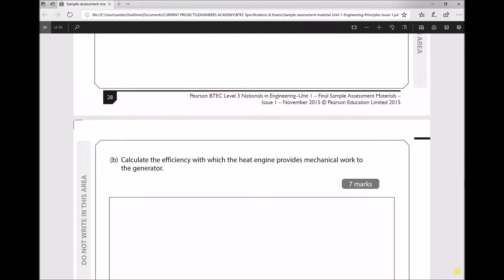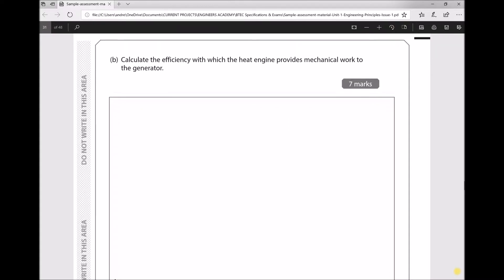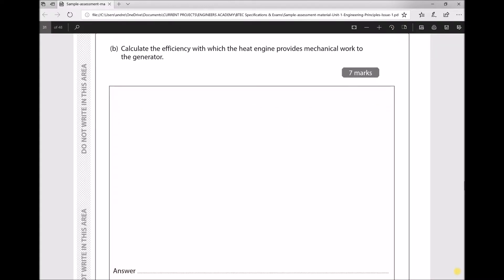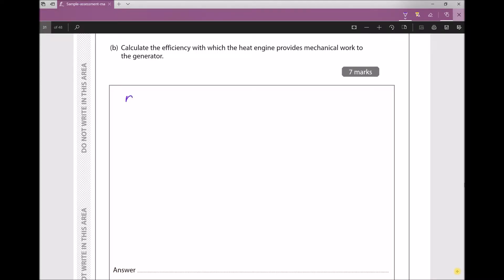Part B of the question asks us to calculate the efficiency with which the heat engine provides mechanical work to the generator. For the heat engine, the efficiency is going to be the power output divided by the heat input. If you're ever unsure which way round these go, this ratio will always end up as being less than one. Basically, what we're trying to do is take as much heat energy as possible—the heat energy being on the bottom—and convert that to mechanical energy on the top.